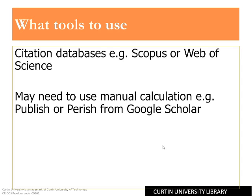Disciplines that are not well serviced by Web of Science or Scopus may require a manual calculation, pulling together citation data from a number of sources. Publish or Perish is a software program designed to retrieve and analyse academic citations from Google Scholar. Be sure to check data from Google Scholar, as it often misidentifies or duplicates citations and it can be difficult to ensure all citations are for the one author.